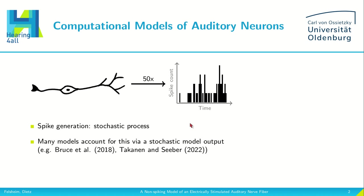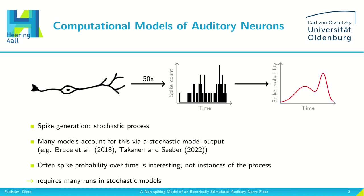Many models account for this stochastic process via stochastic model output. However, often the spike probability over time is interesting, not individual instances of this stochastic process. However, to estimate the spike probability over time many runs in stochastic models are required.